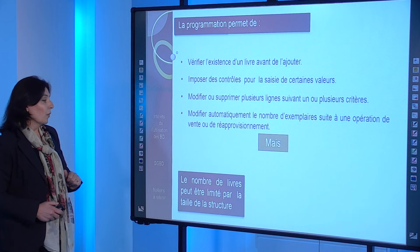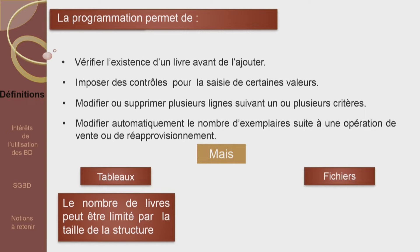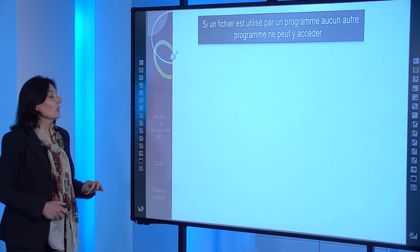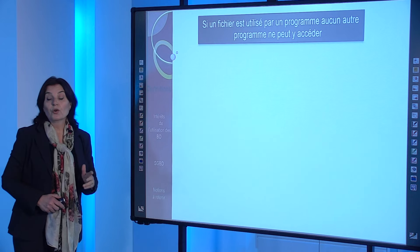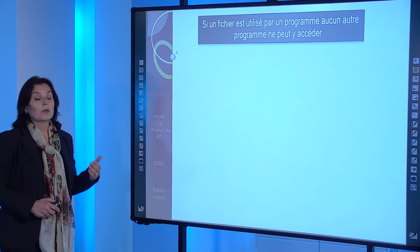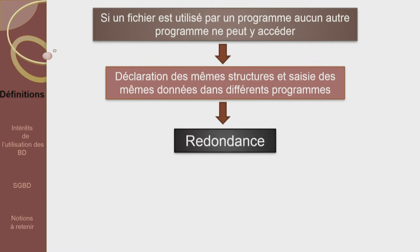Mais le nombre de livres peut être limité par la taille de la structure si on choisit les tableaux. Quant aux enregistrements et fichiers, ils sont utilisés exclusivement pour le programme qui les crée : si un fichier est utilisé par un programme, aucun autre programme ne peut y accéder. Ce qui va nous obliger de déclarer les mêmes structures et saisir les mêmes données dans différents programmes, ce qui donne une redondance. La redondance augmente le volume de données.